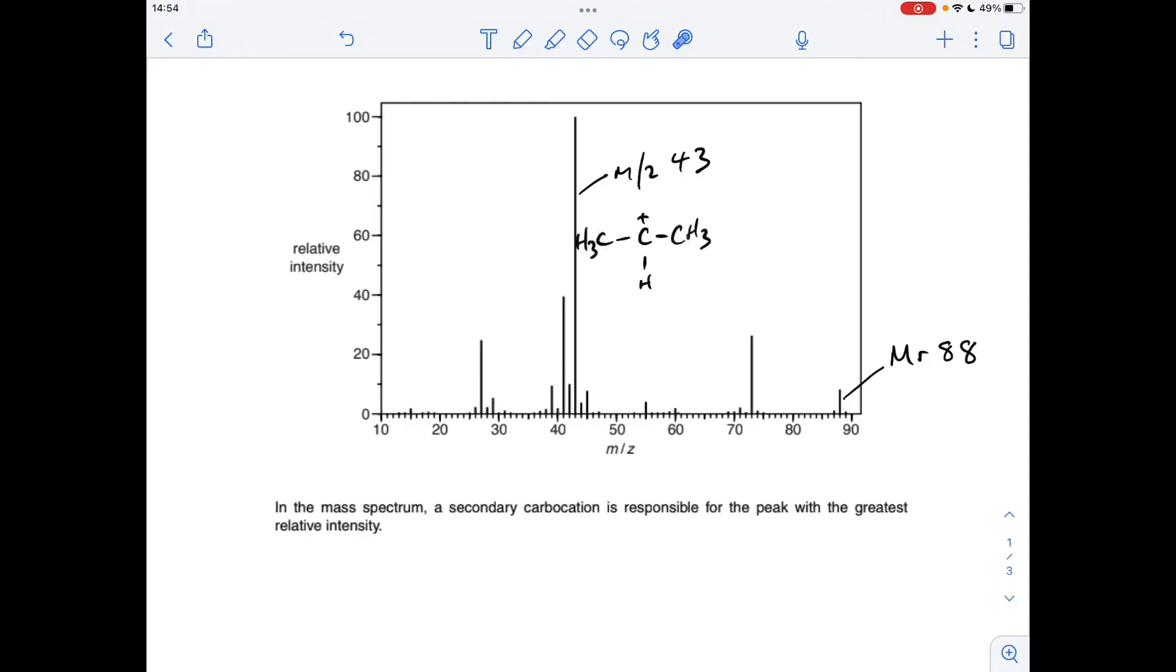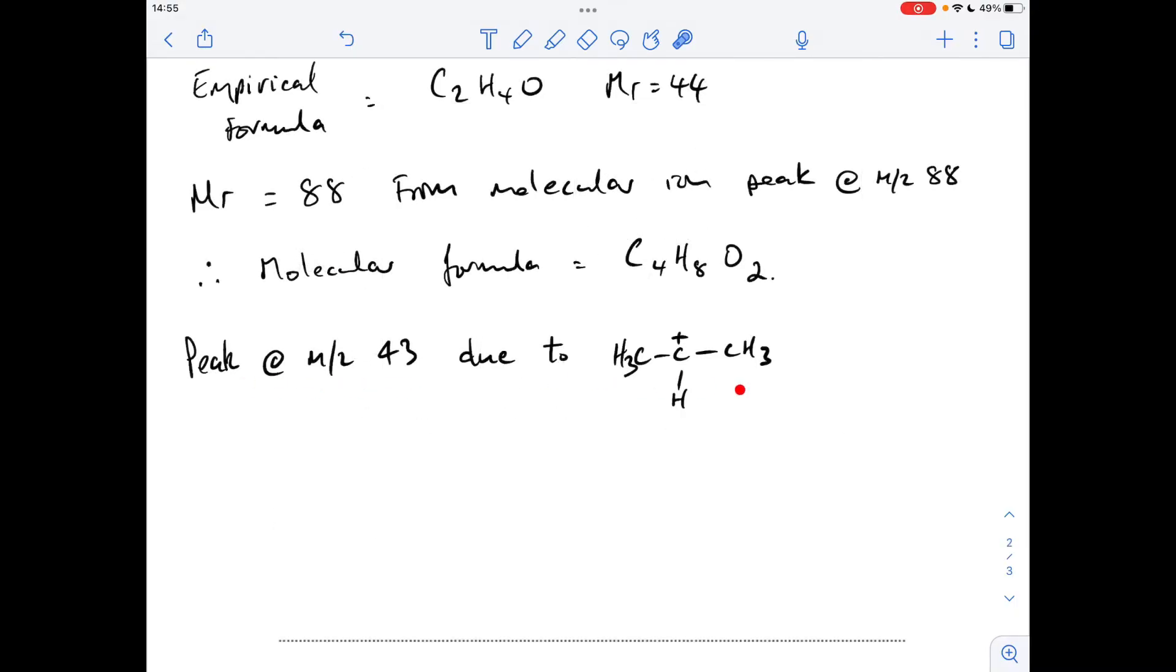And the only way you can get an Mr of 43 for that is if you have methyl groups on each side there, so that is what's responsible for this peak here. So there's that written up there.